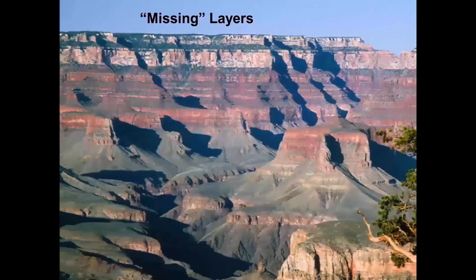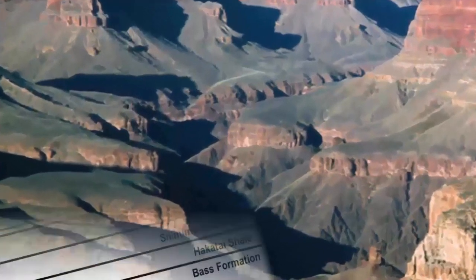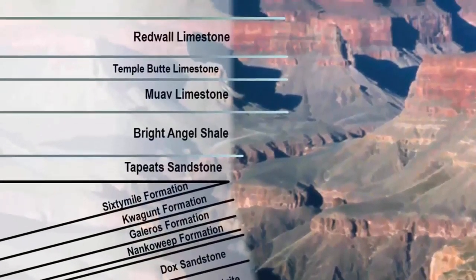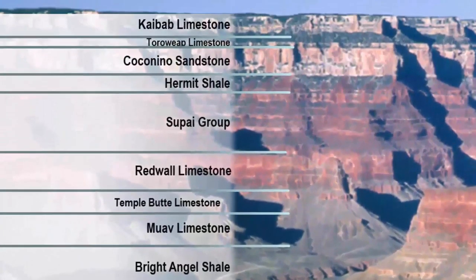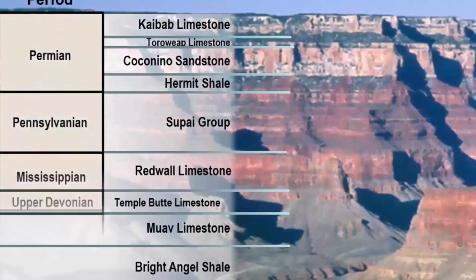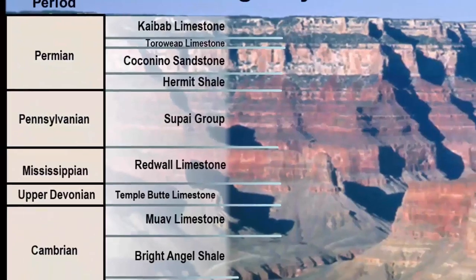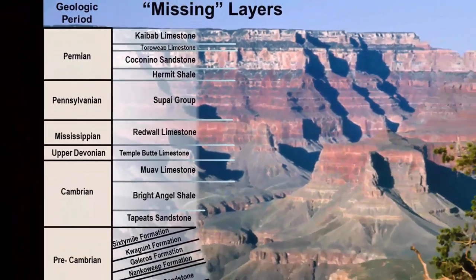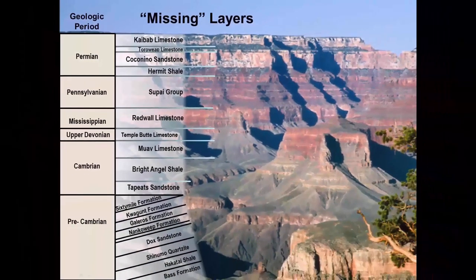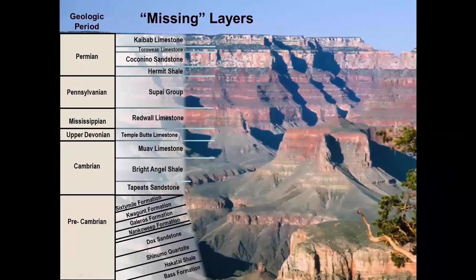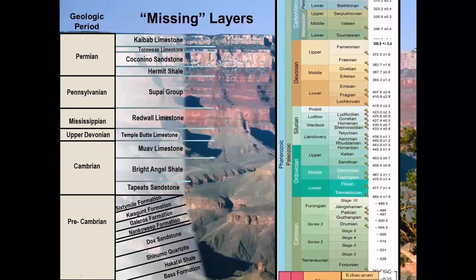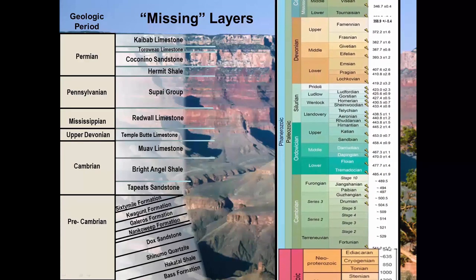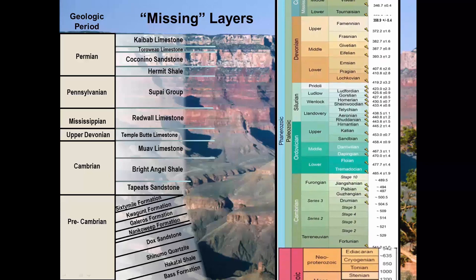Visitors to the canyon are shown the names of dominant layers of strata. Park geologists believe the sedimentary layers were deposited gradually over nearly one billion years and have assigned geologic periods of time to each layer group. Curiously, amidst the stack of horizontal layers in the canyon, a huge period of alleged time is missing from their own timeline of the past.